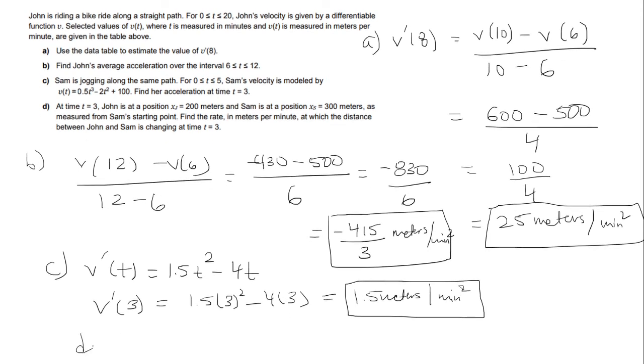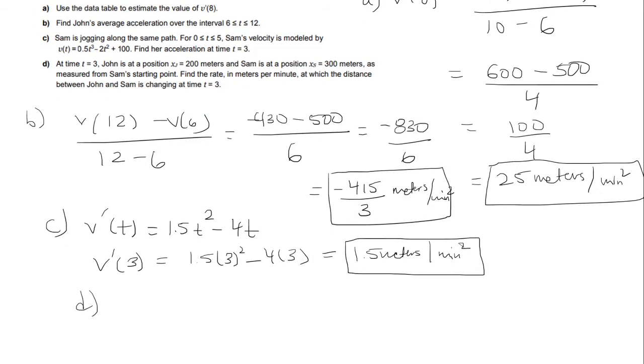Okay part D. At time t equals 3, John is at position 200 meters, Sam is at position 300 meters, as measured from Sam's starting point. So find the distance between John and Sam is changing at t equals 3. Okay so for this it's good to draw a diagram. So John is over here, Sam is over here, and let's say this is 0. So John is at 200 meters, Sam is at 300 meters. So right now they're 100 apart.